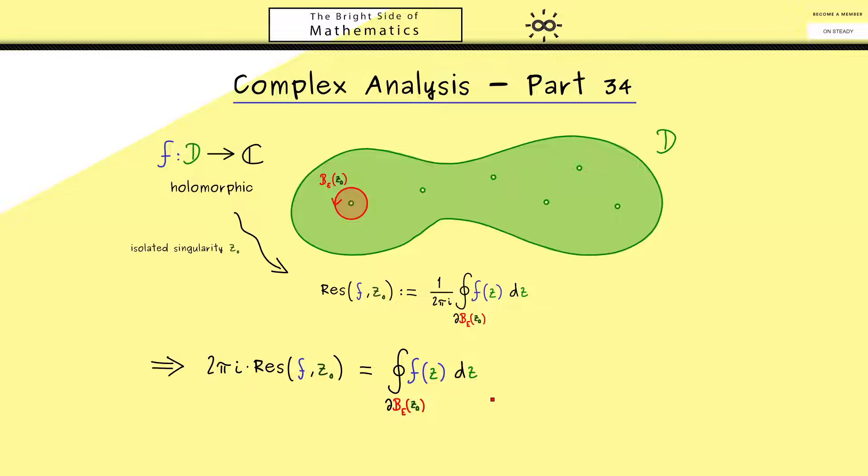Moreover you also know by our discussion of the keyhole contour that it does not matter which circle we choose here as long as there is only Z0 inside as the only isolated singularity.